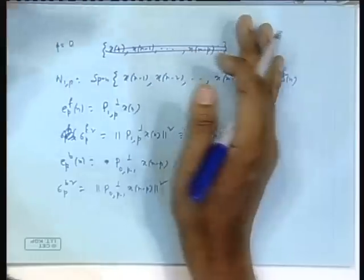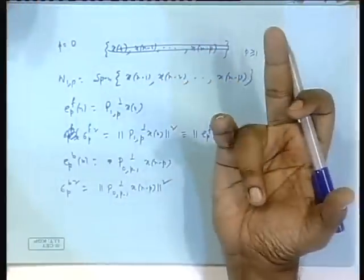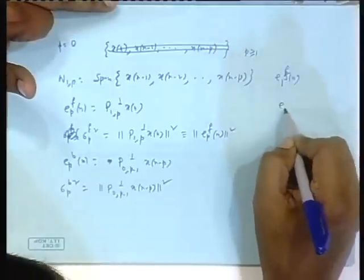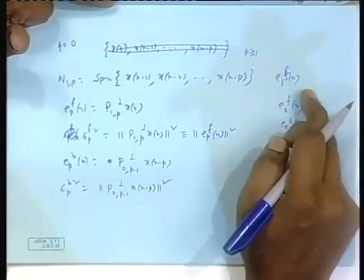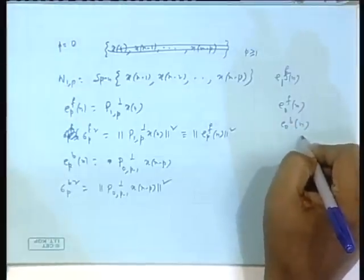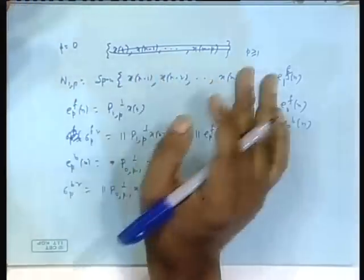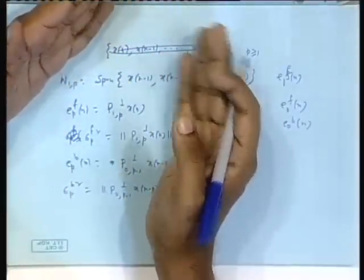To get E_1_f_n you have to start at E_0_f_n. E_0_f_n means x_n projected on nothing — the error being x_n itself. These are qualitative terms; you have to define separately what E_0_f_n and E_0_b_n are. Using those, you find E_1_f_n and E_1_b_n. Because the recursion starts at p equal to 1 and goes to 2, 3, 4, etc., you need the p equal to 0 case, but p equal to 0 has no mathematical meaning since there is no element.